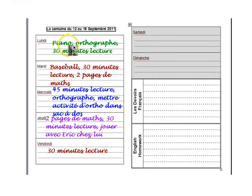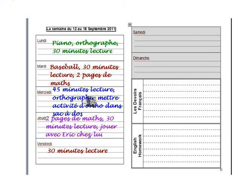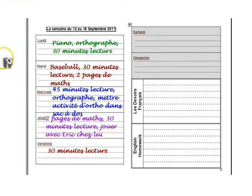Here is a sample weekly entry from a student: Monday — piano, spelling, 30 minutes of reading. Tuesday — baseball, 30 minutes of reading, two math pages. Wednesday — 45 minutes of reading, spelling, put spelling activity in backpack, because usually the French spelling test is on Thursday, so they have their spelling activity ready on Wednesday to turn in on Thursday. Thursday — two pages of math, 30 minutes of reading, play with a friend. Friday — 30 minutes of reading. Saturday and Sunday they can also write things they do outside of school.